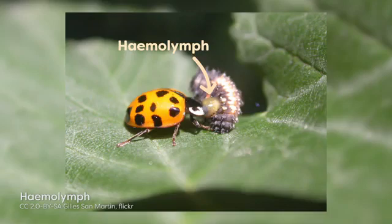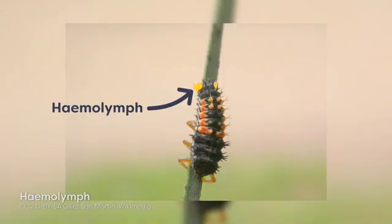The hemolymph is a watery fluid that contains cells, inorganic ions, and organic molecules such as lipids, sugars, amino acids, and proteins. It is typically colourless, unlike the blood of vertebrates, though in some cases pigments provide colours such as yellow, blue, and rarely even red. The hemolymph is a major component of an insect's mass. In soft-bodied larvae, this fluid can make up 20-40% of the insect's body weight, and usually makes up about 20% of the body weight in nymphs and adults.